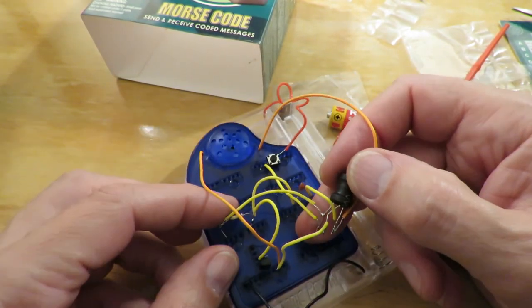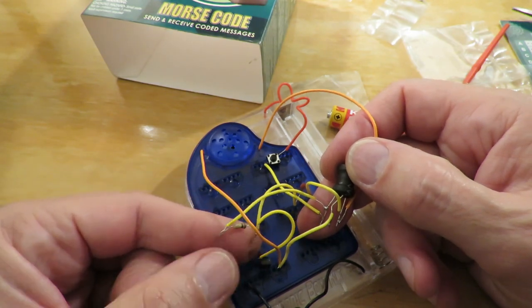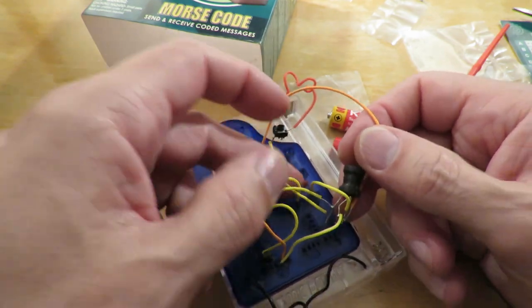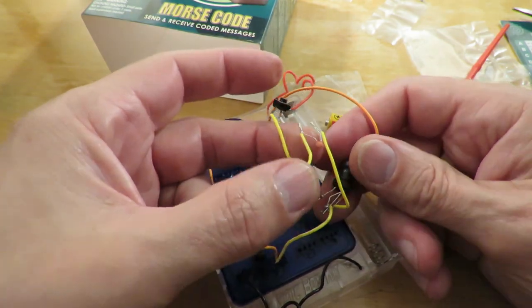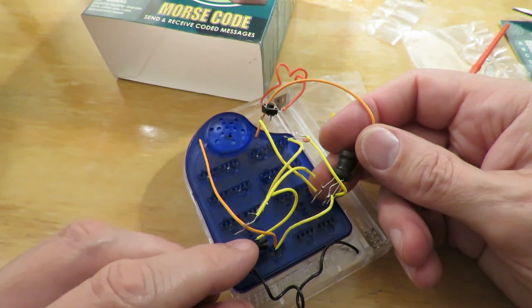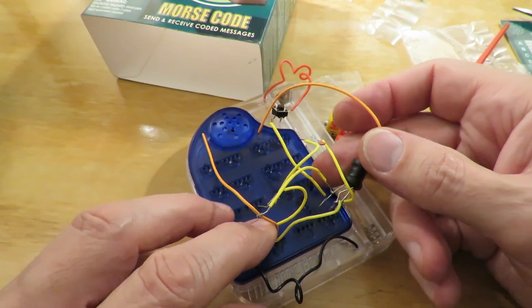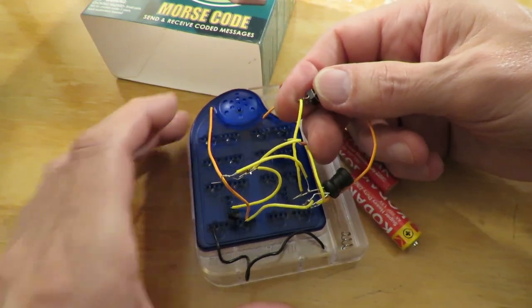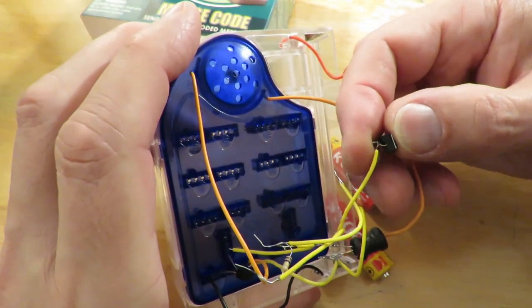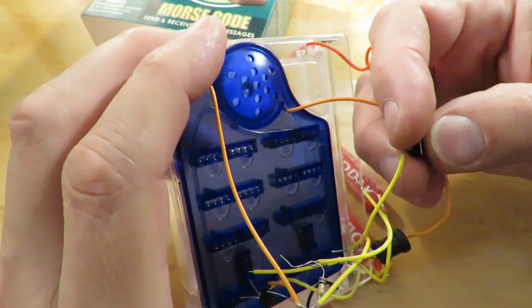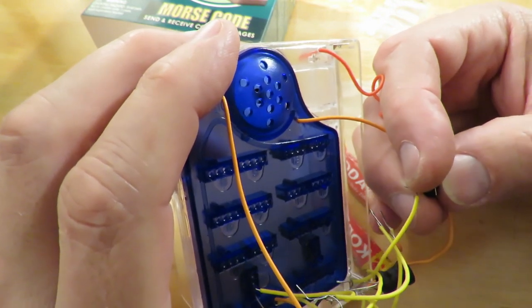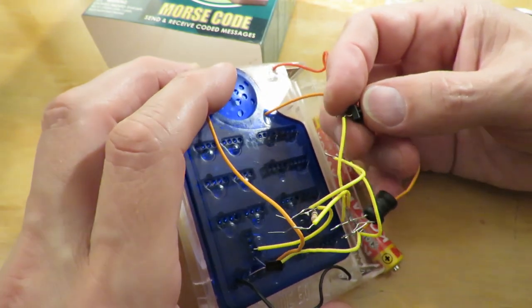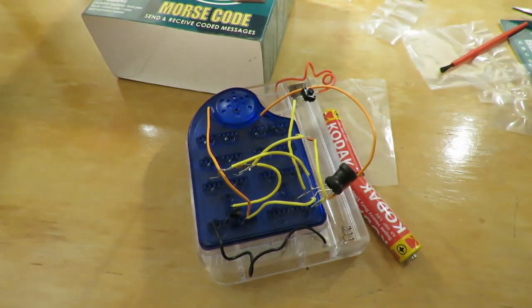There you go. I've soldered the legs on, soldered the resistor in place, soldered the switch, soldered the capacitor. The only thing I haven't soldered actually is the transistor.